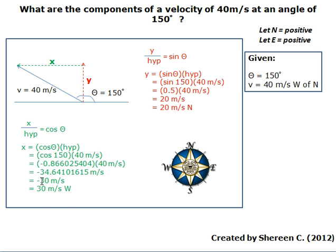Notice that the negative denotes west. Remember that the negative sign simply means direction, west or left in this case.